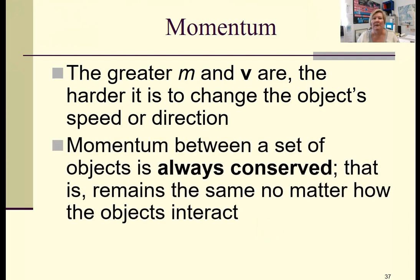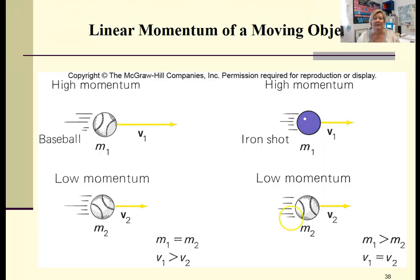Momentum is another conservation law. Momentum between interacting or a set of objects is always conserved. This image here is just showing high momentum versus low momentum for a baseball.